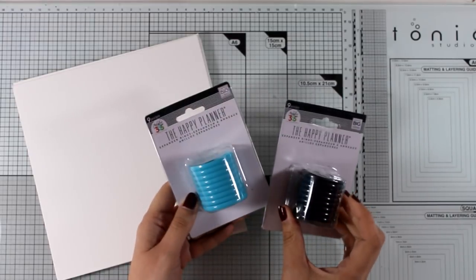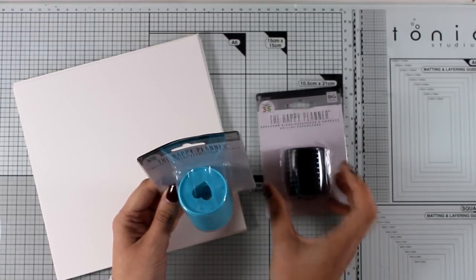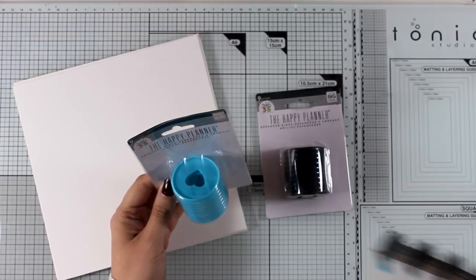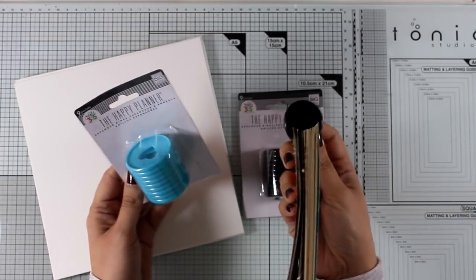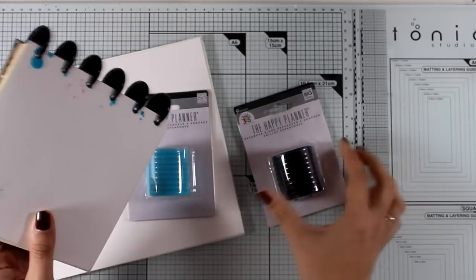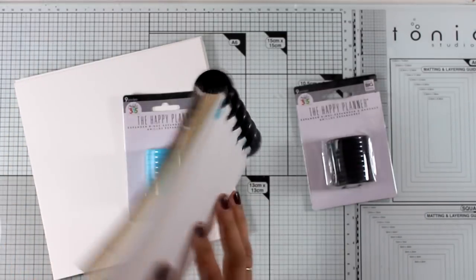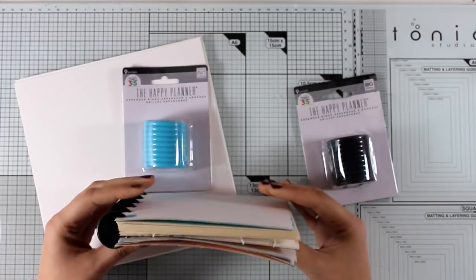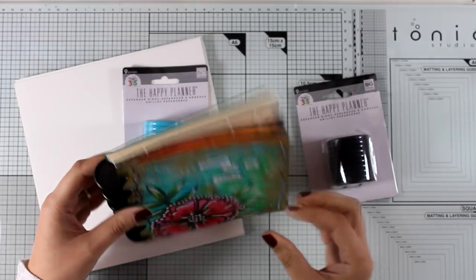The large discs are by the Happy Planner system, and I also love the smaller ones - these are by Juggles and you can get them separately, of course.